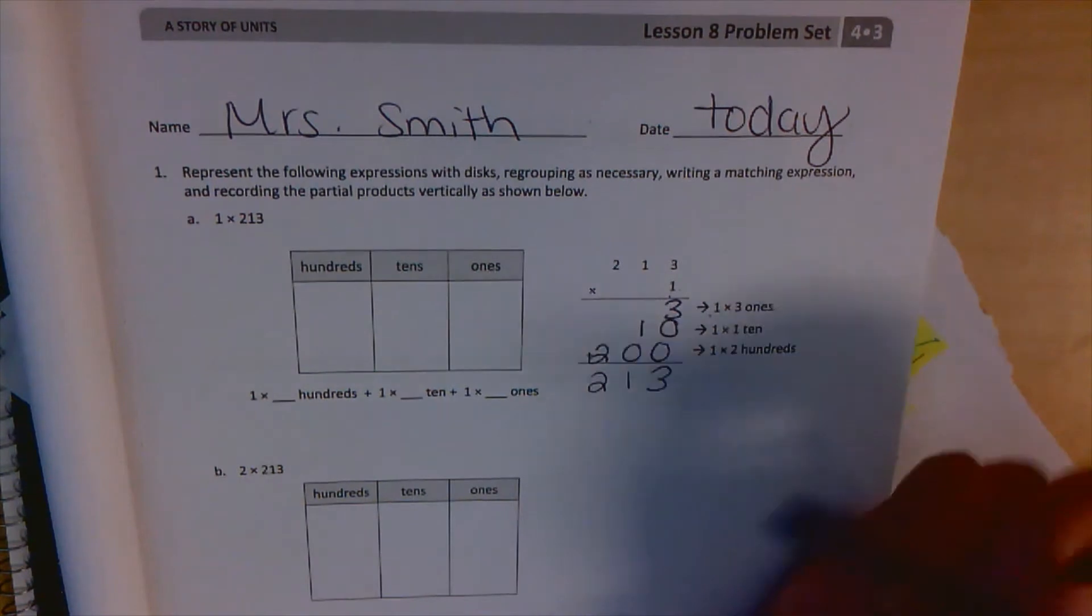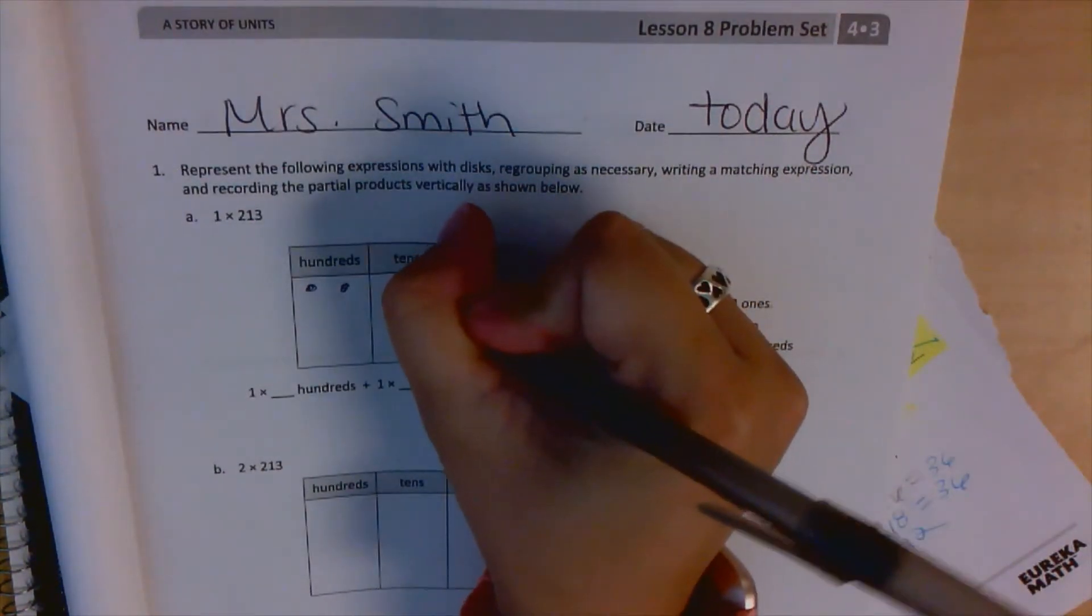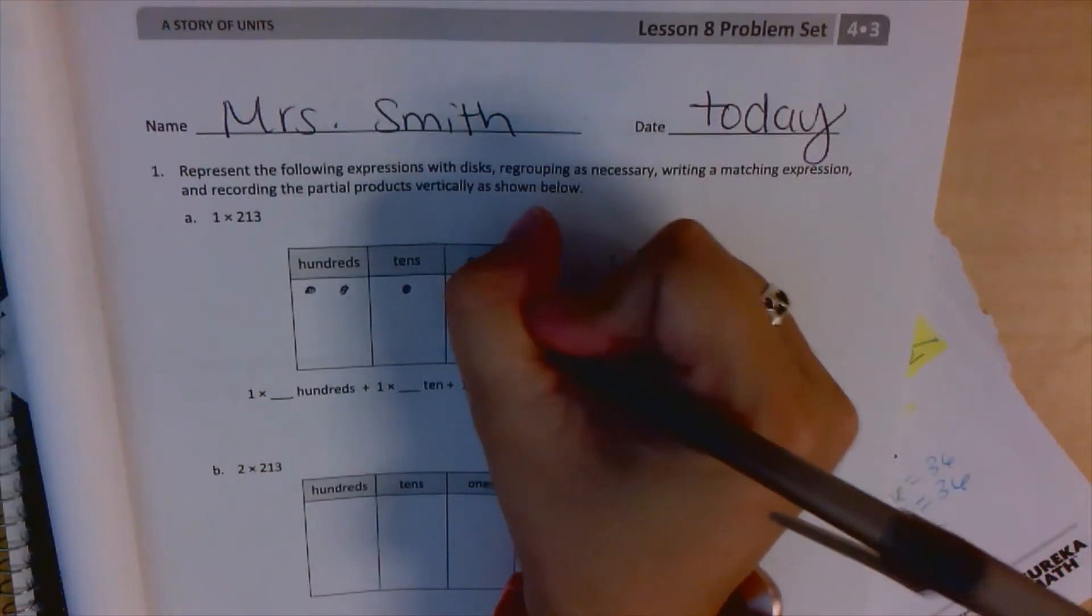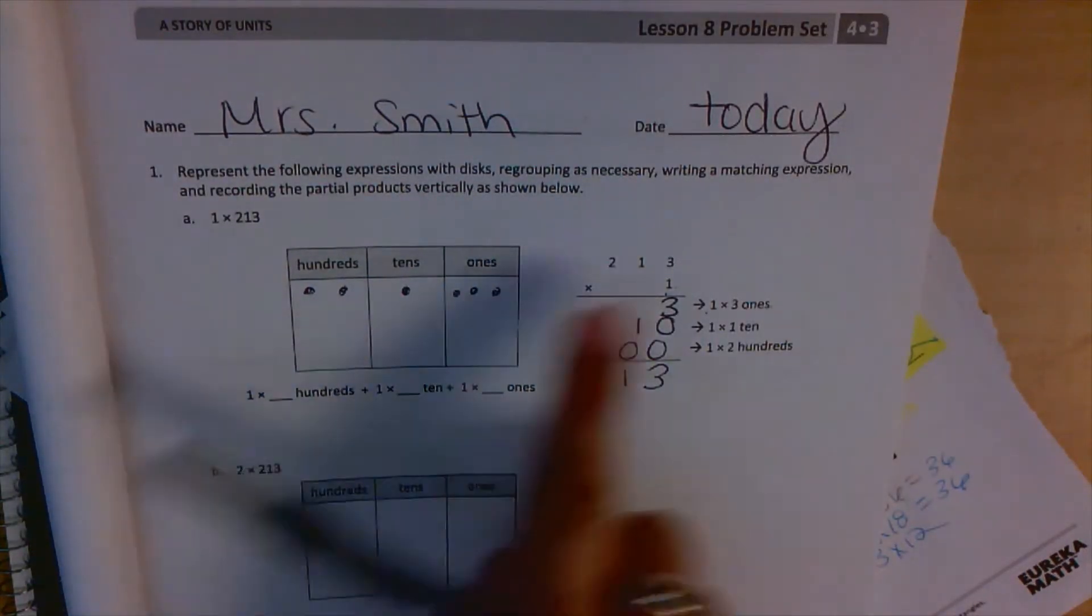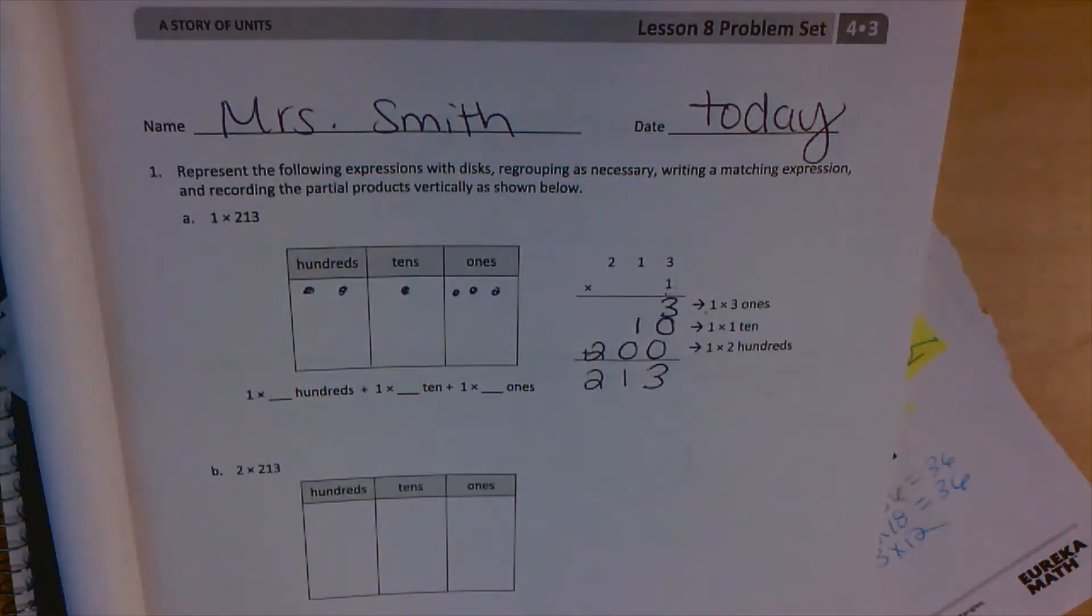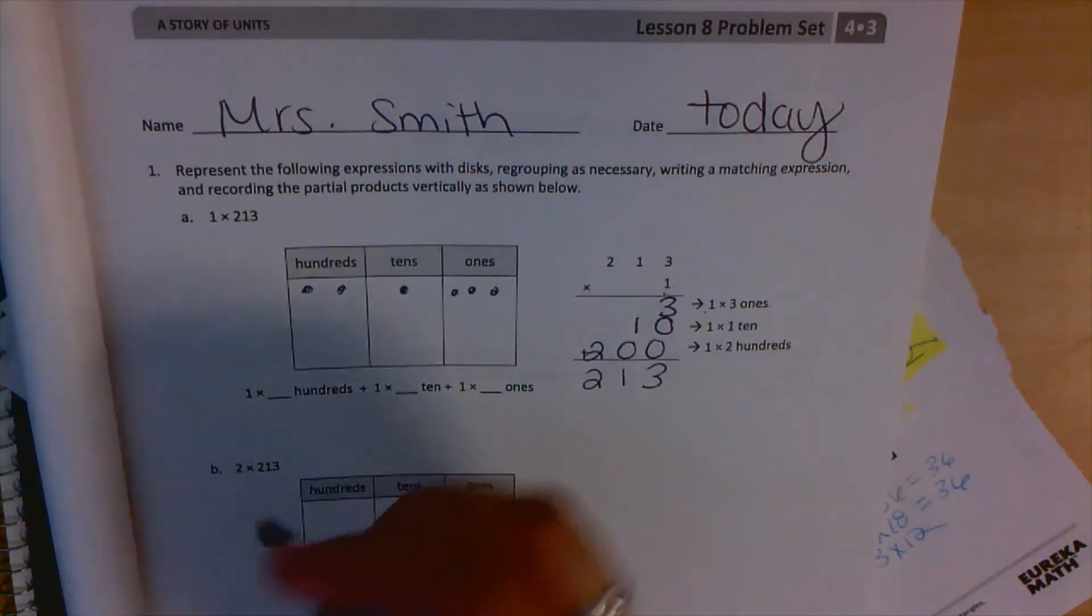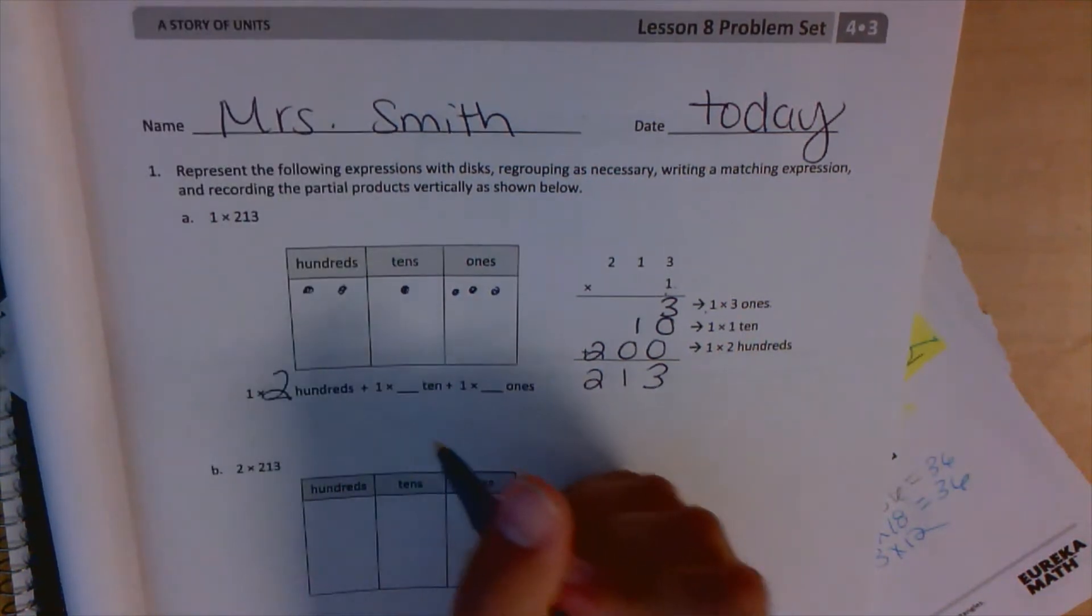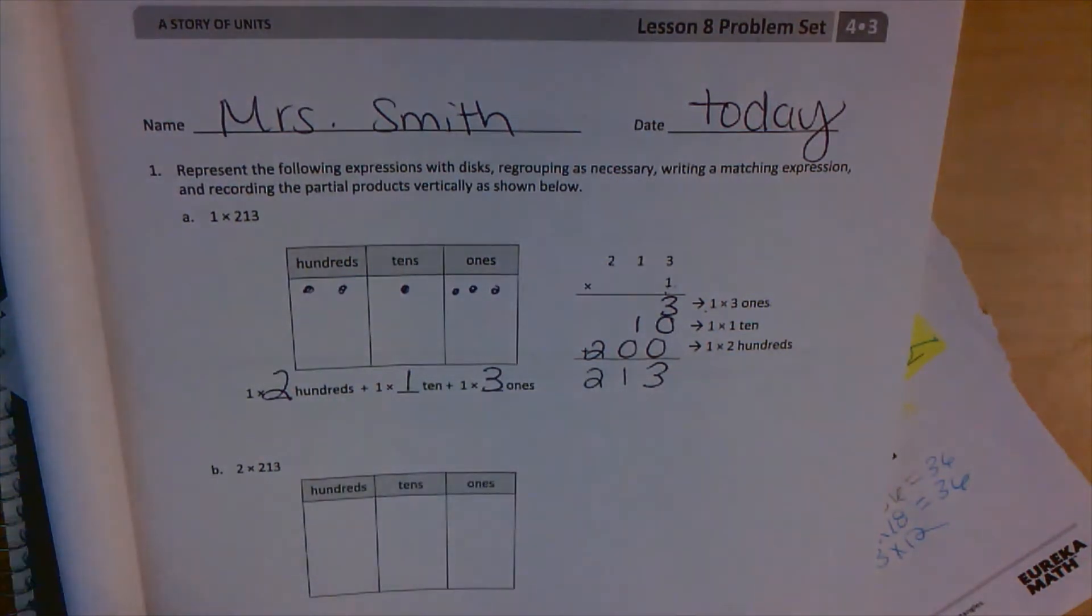If I were to show this in the place value chart, that would be 200, 1 ten, 3 ones. I have it one time. Down here, we have 1 times the 200s, 1 times the 1 ten, and 1 times the 3 ones.